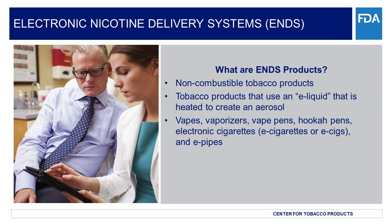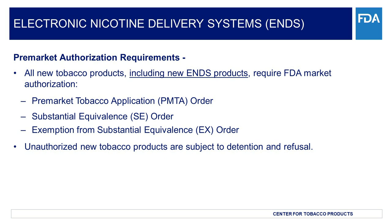Additionally, there are examples of ENDS products under the Additional Resources section of this presentation. All new tobacco products, including new ENDS products, require FDA market authorization orders in effect to be legally sold and/or distributed to customers in the U.S. Per Section 910 of the FD&C Act, a new tobacco product is any product not commercially marketed in the United States as of February 15, 2007, or the modification of a tobacco product where the modified product was commercially marketed in the U.S. after February 15, 2007.